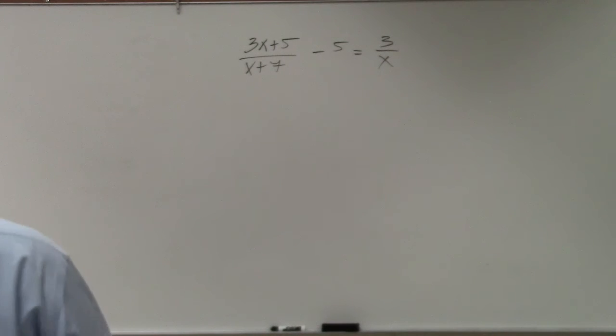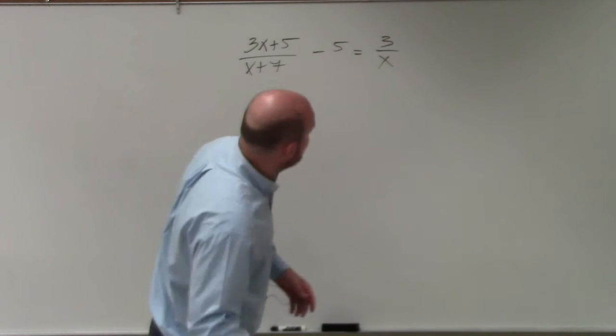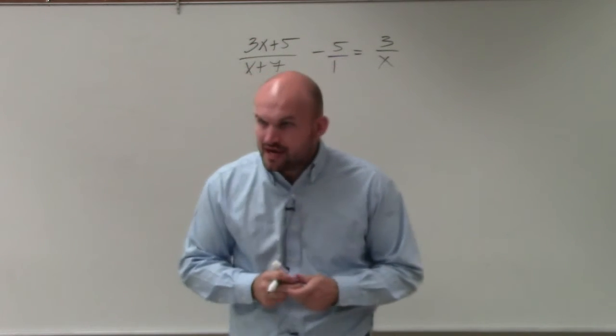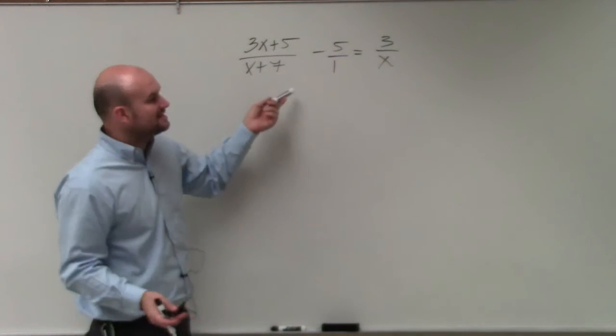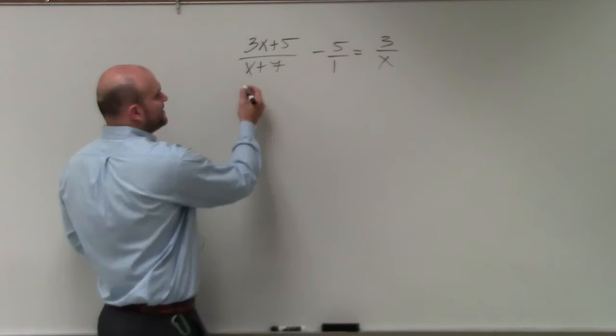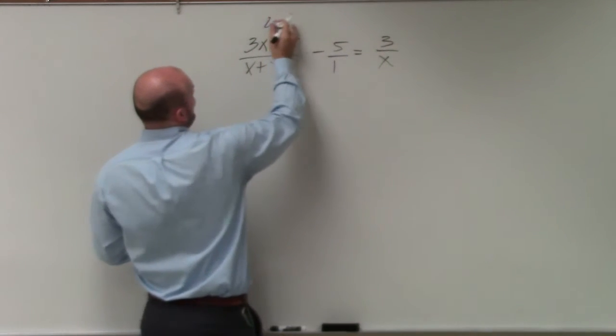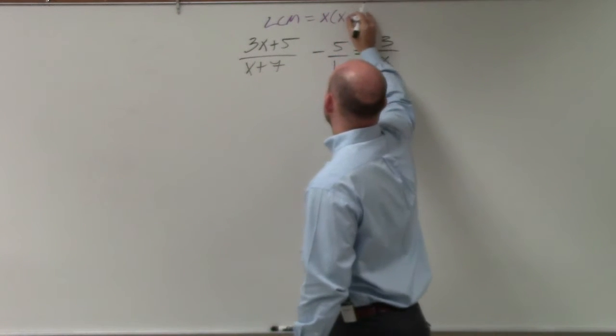To determine a multiplier to eliminate, this is different than the other ones we've done because our denominator is variables. But it doesn't matter if it was like the first problem I did where we found our least common multiple to be 12. We need to figure out a value where x plus 7 and x both divide into. In reality, the LCM is just going to be as simple as x times x plus 7.